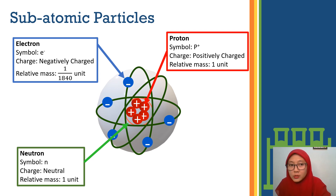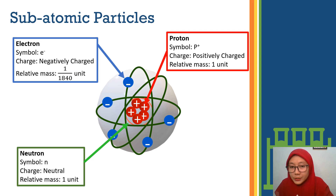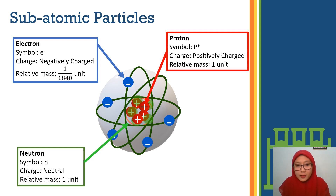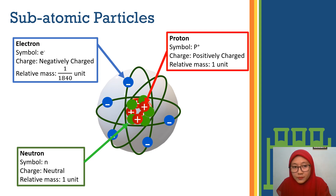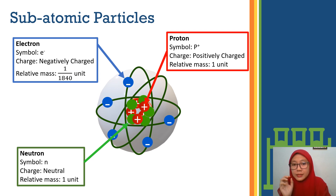In subatomic particles, we have the negative charge, positive charge, and neutral. The negative is electron, the positive is proton, and the neutral is neutron. The neutron and proton are placed at the middle, at the center of the atom. The electron is placed around the atom.